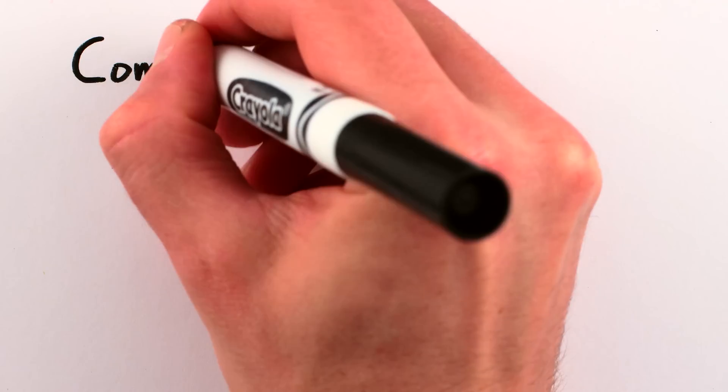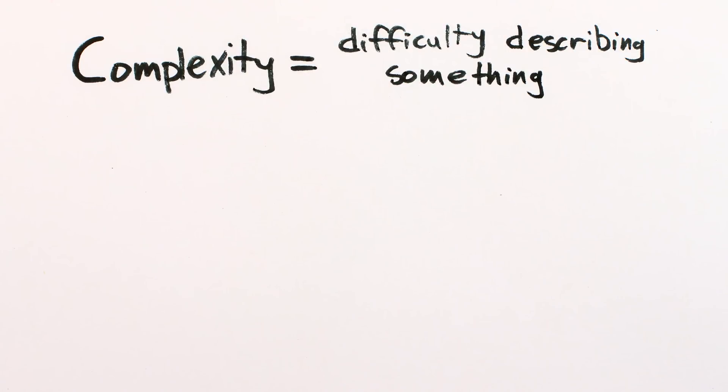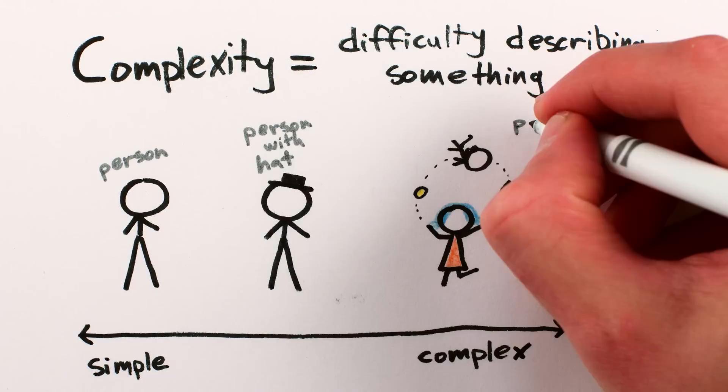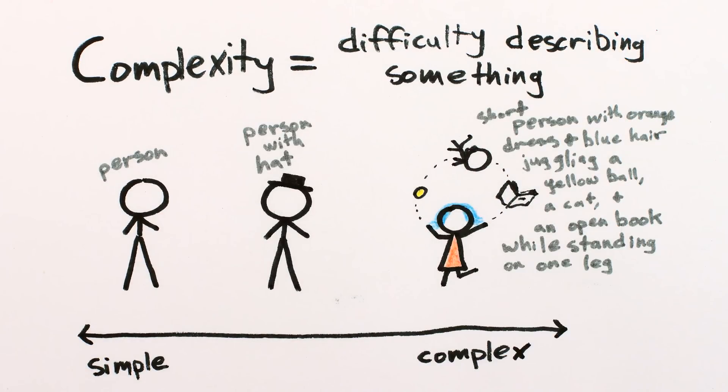There are lots of different ways. Complexity, on the other hand, is a measure of how hard it is to describe a set of large-scale properties. Simple systems are easy to describe. Complex systems require a lot more information.